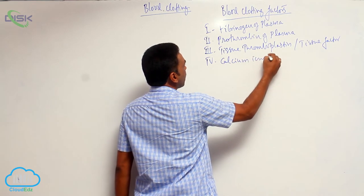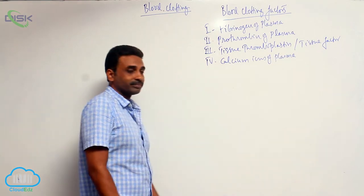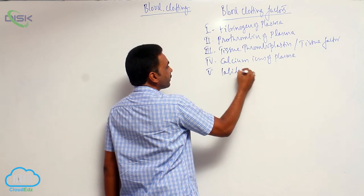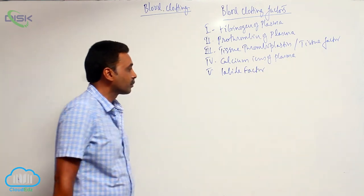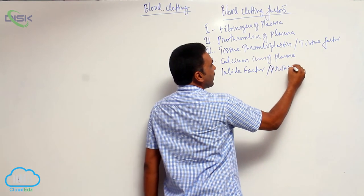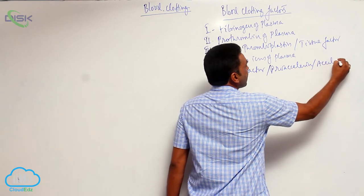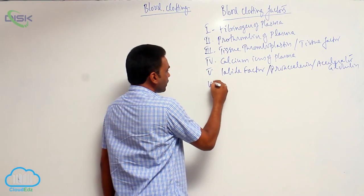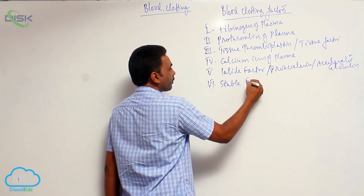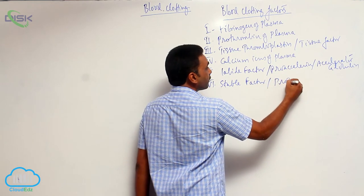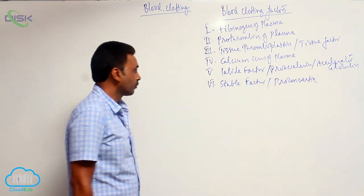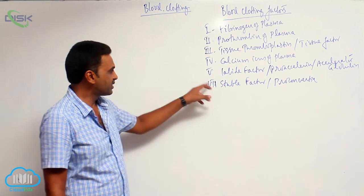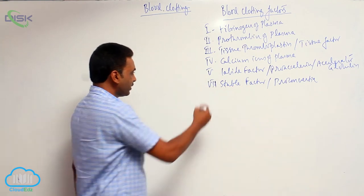Factor number 4 is calcium ions of plasma. Factor number 5 is labile factor, also called pro-accelerin, also called accelerator globulin. Factor number 6 is stable factor, also called pro-converting factor — however, factor number 6 is now omitted, and this is actually factor number 7.